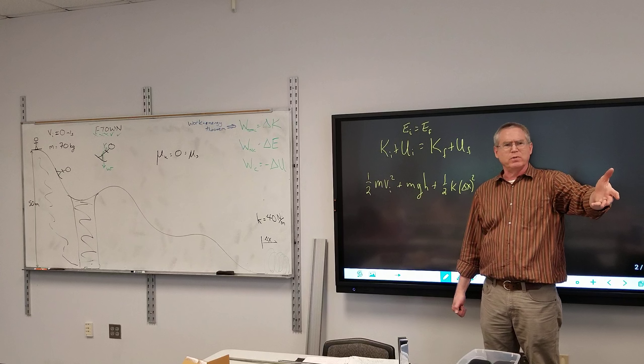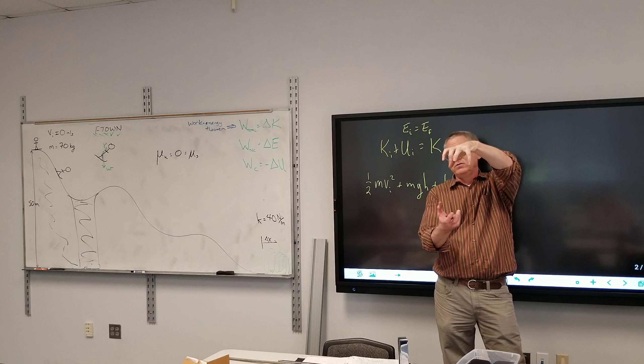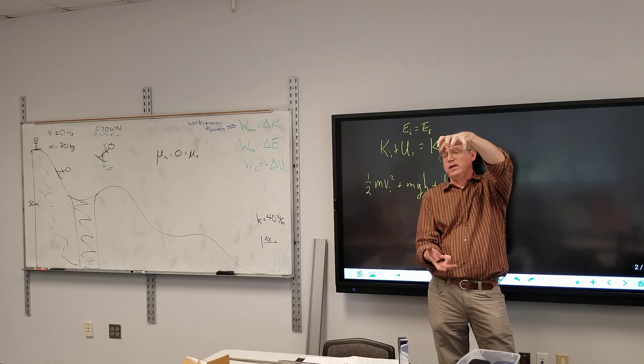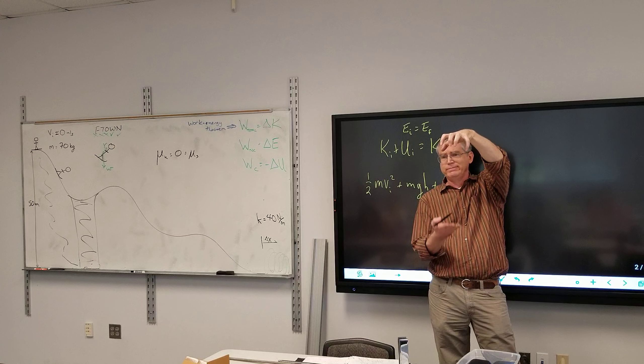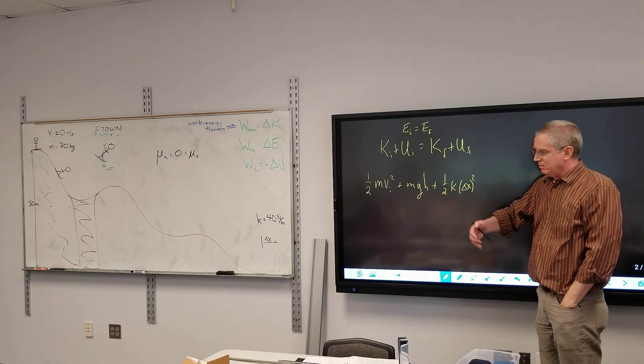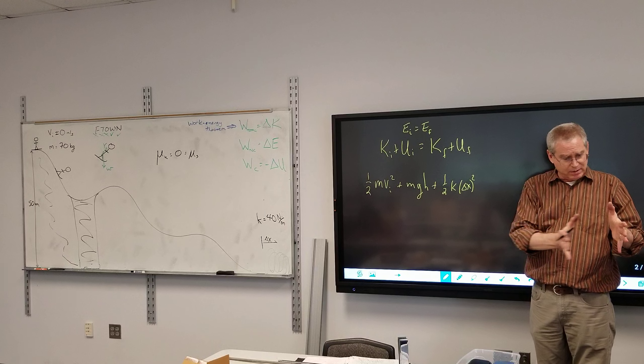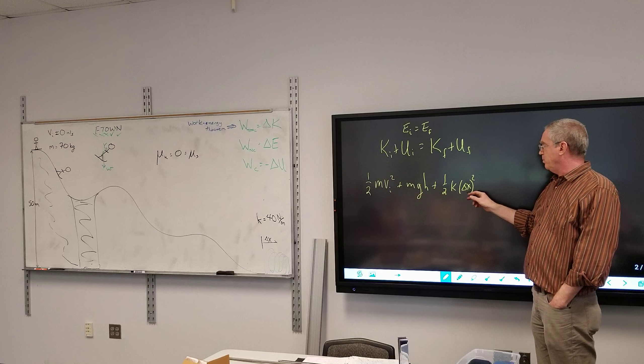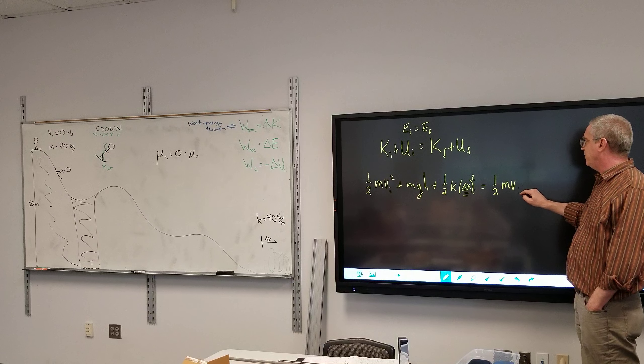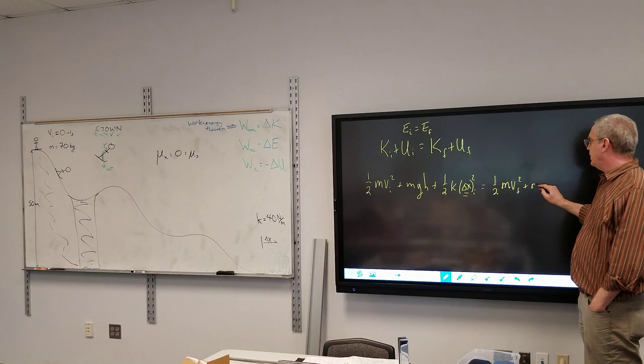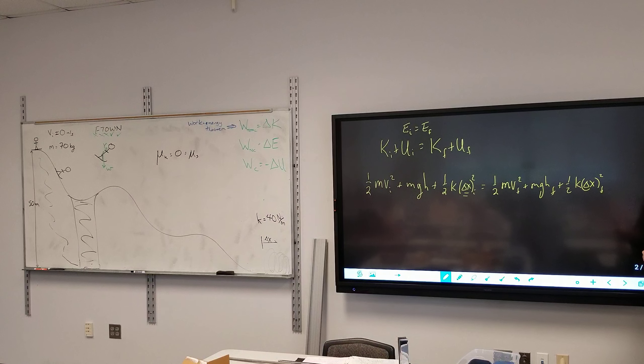One half k delta x squared. That delta x is how far it compresses from equilibrium. So if you take a slinky and grab it by the end here, it's going to hang down a certain amount. That's the equilibrium right there, however far it just hangs. Then I can stretch it or compress it, and how far I stretch it or compress it from where its equilibrium is, that's what we're talking about here. And this is the initial, and then the same stuff except final. And it would be one half mv final squared plus mgh final plus one half k delta x final squared.